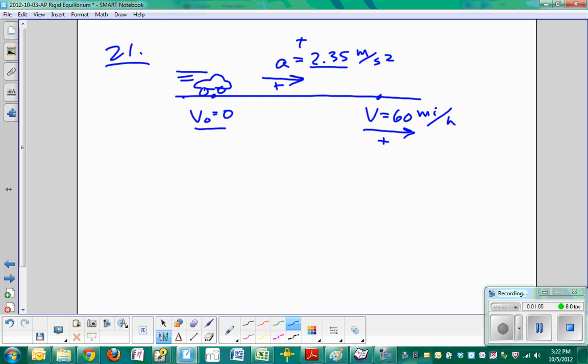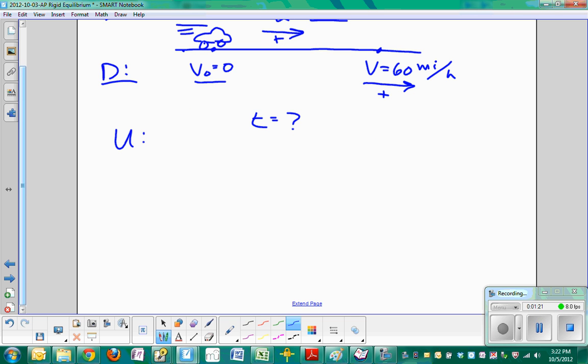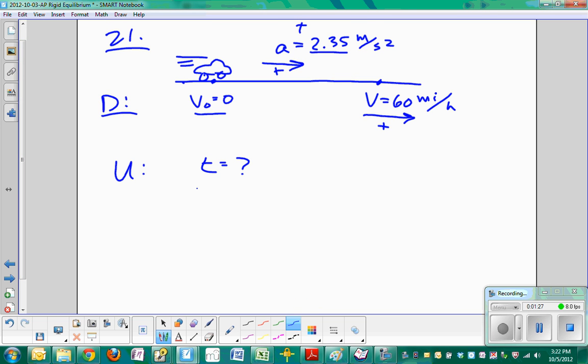It says that how much time does it take for the beetle to reach the speed? So T is what we want to know. So now there's our drawing for D. Now we go down to U, unknowns and knowns. This is unknown, but we just said that T is our, I don't know, so what else do we have that we're given? We have V naught is equal to zero. We have final velocity equal to 60 miles per hour, which we will now convert.